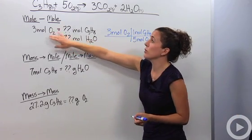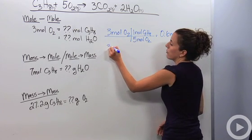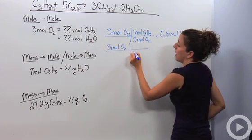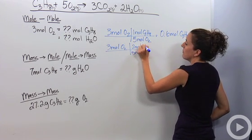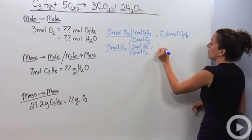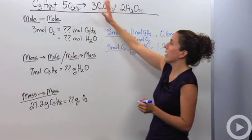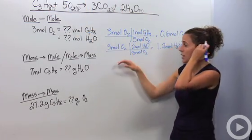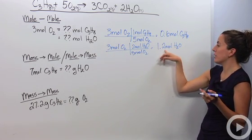If we had three moles of O2, how many moles of water can we produce? We do the same mole ratio: three moles of O2 times two moles of H2O over five moles of O2. Three times two divided by five gives us 1.2 moles of H2O. So with three moles of oxygen gas, we can produce 1.2 moles of water.